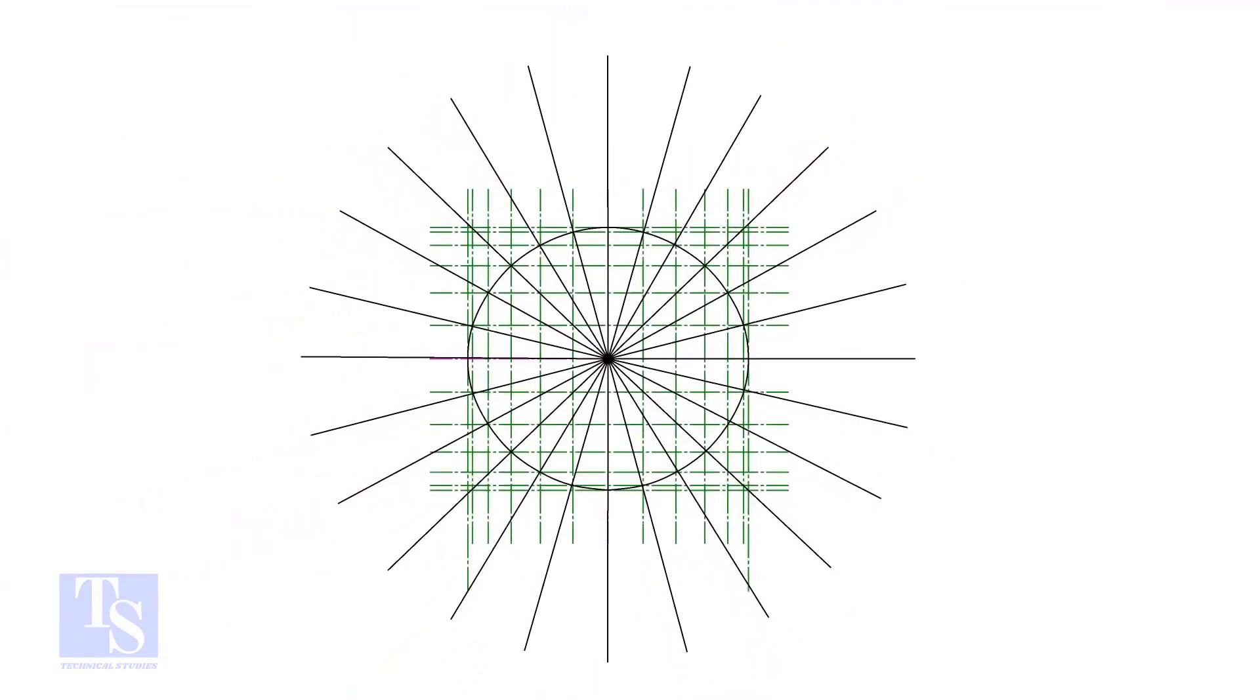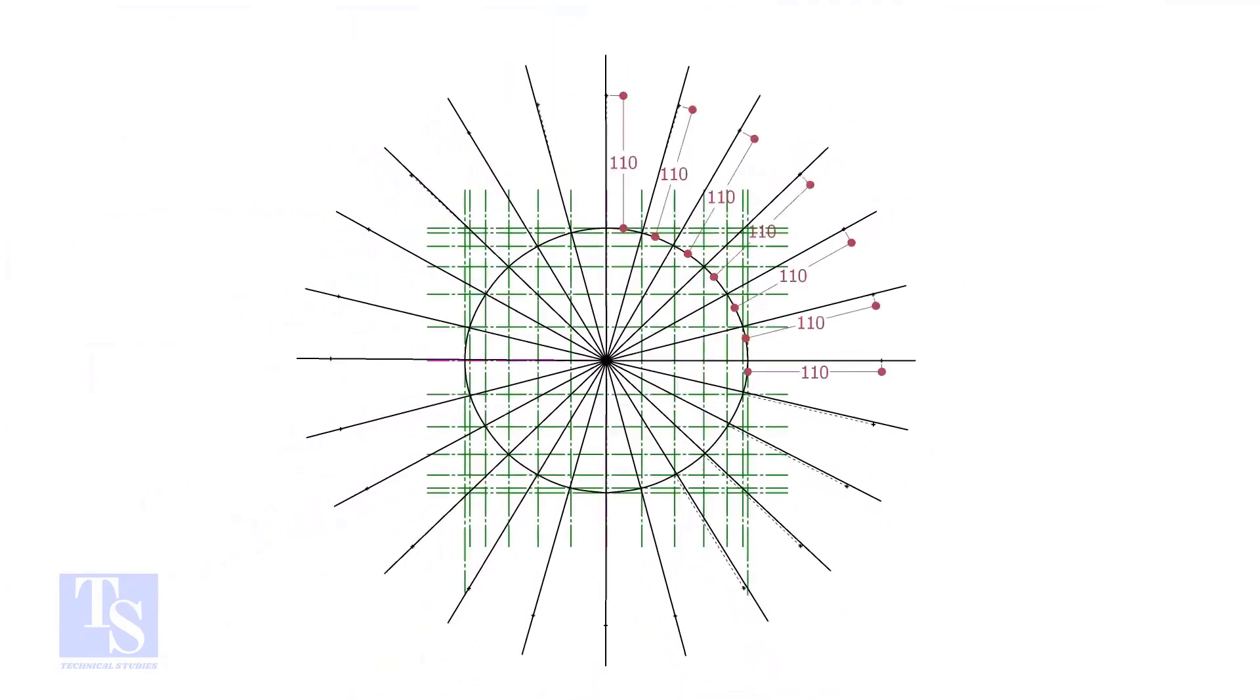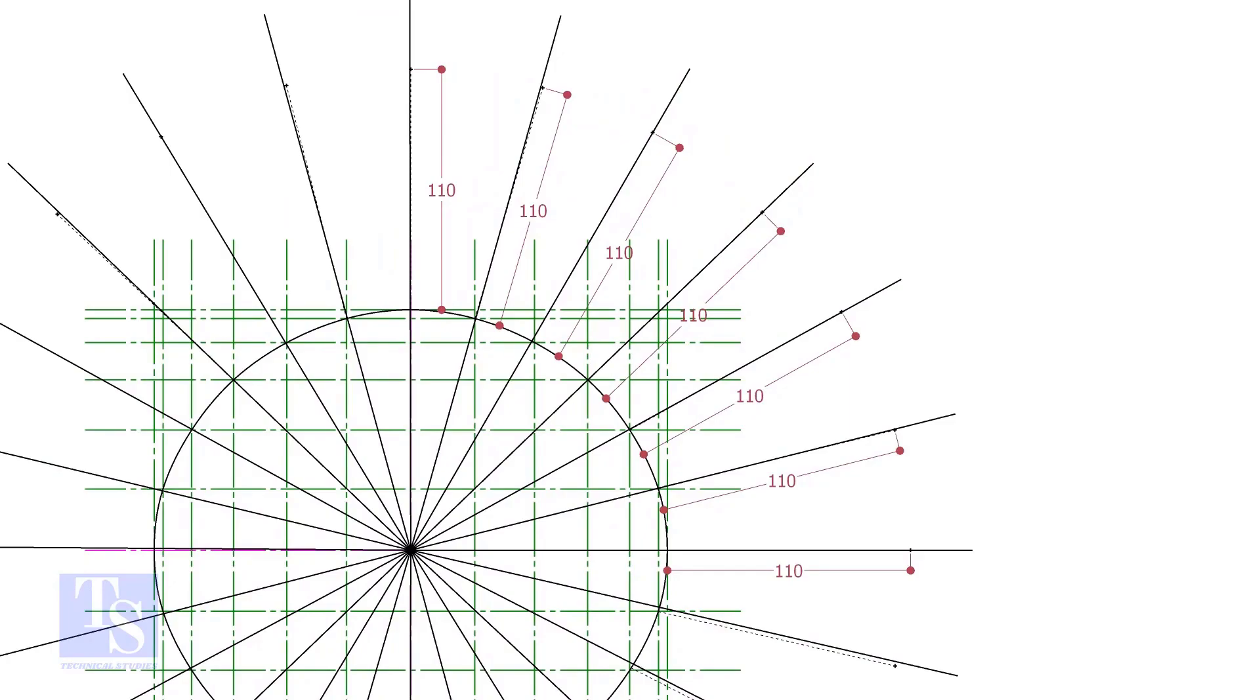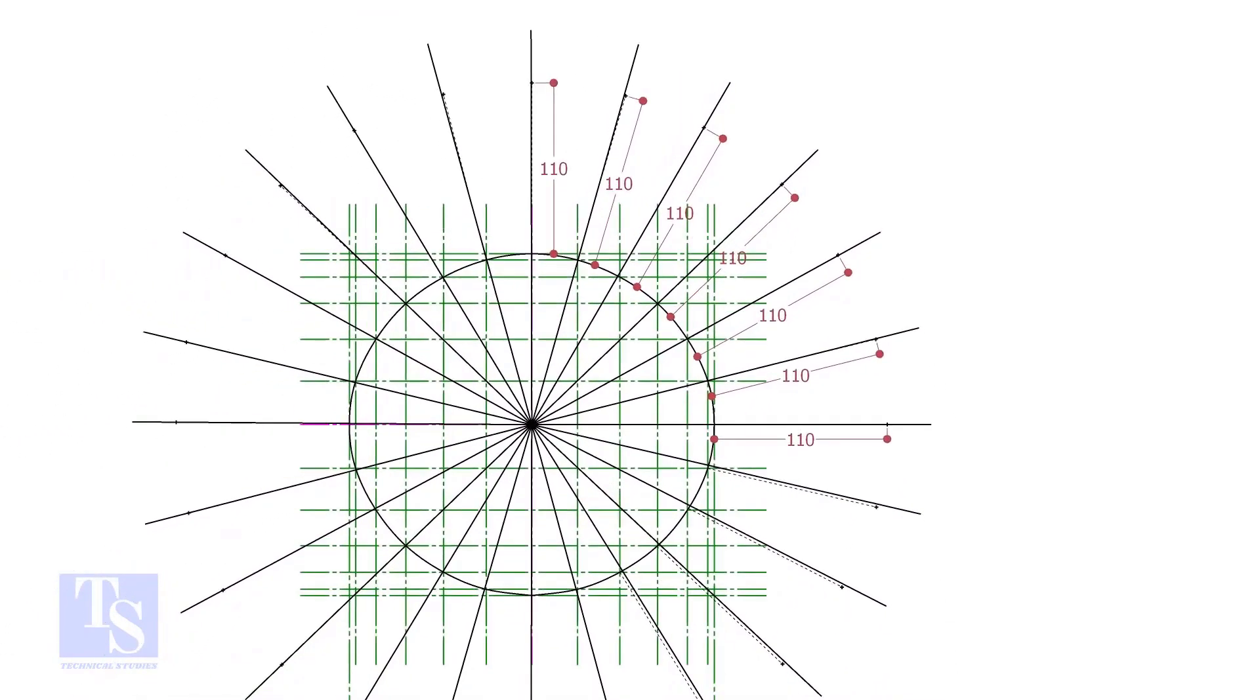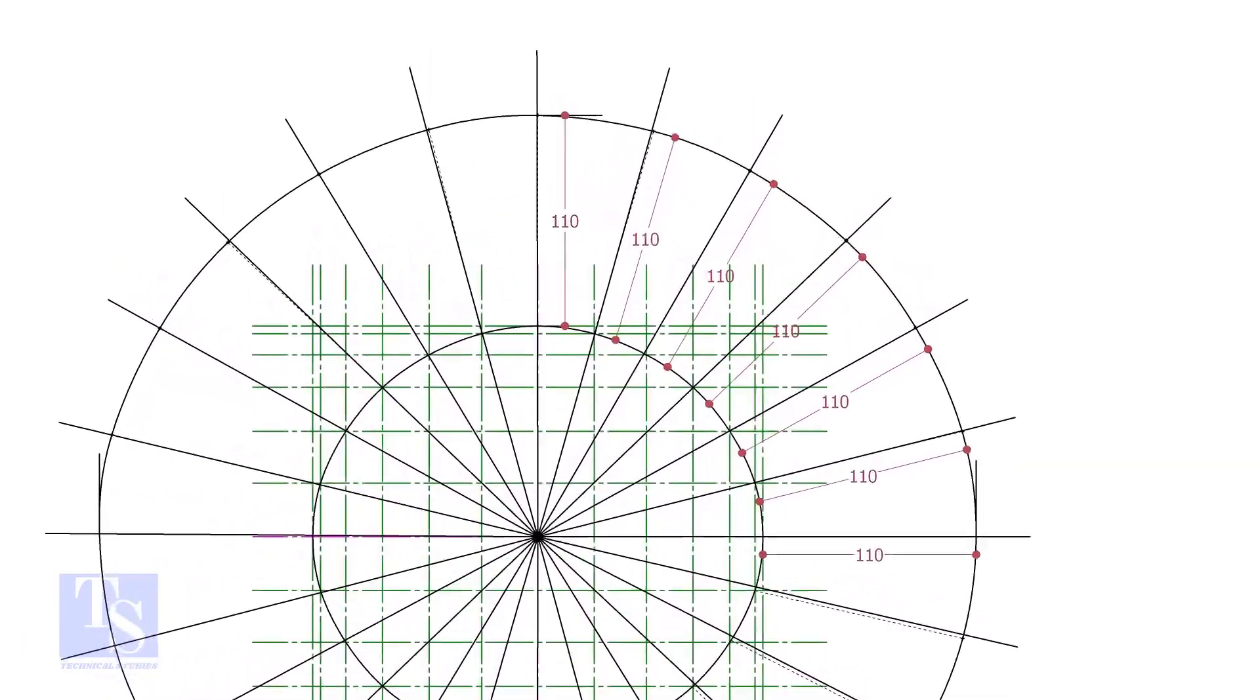Let us mark the width of the RF pad. To get a uniform width, draw tangential lines as shown. Mark 110mm, which is half the diameter of the branch pipe, all around the opening as shown. Draw a smooth curve through these marks.